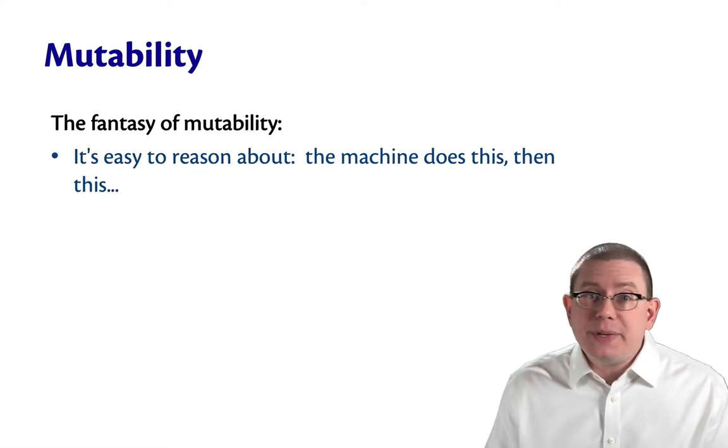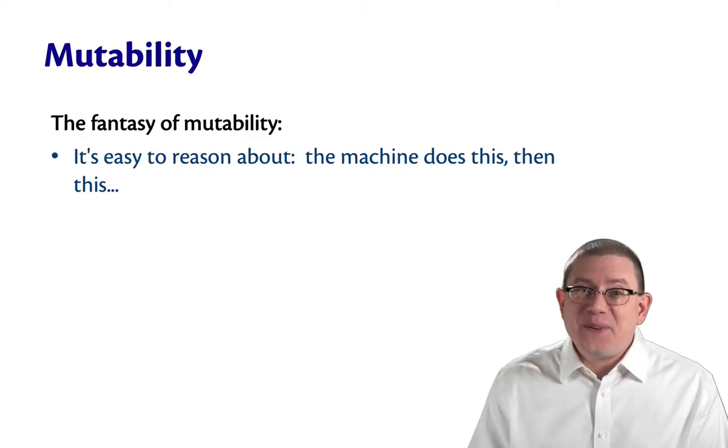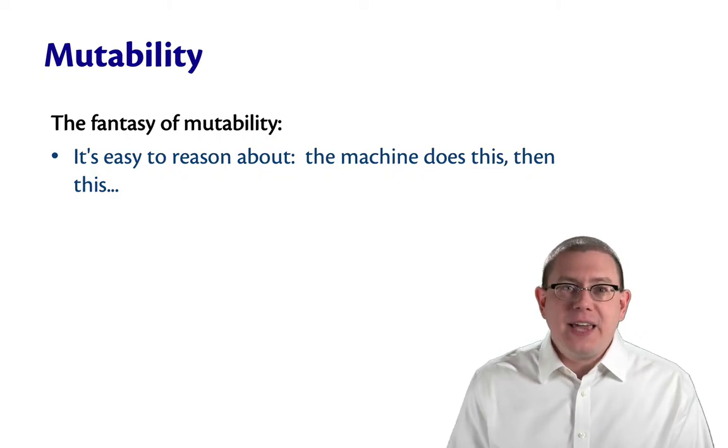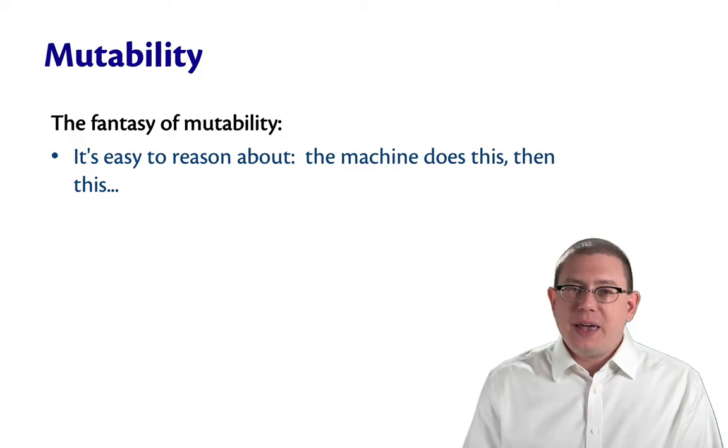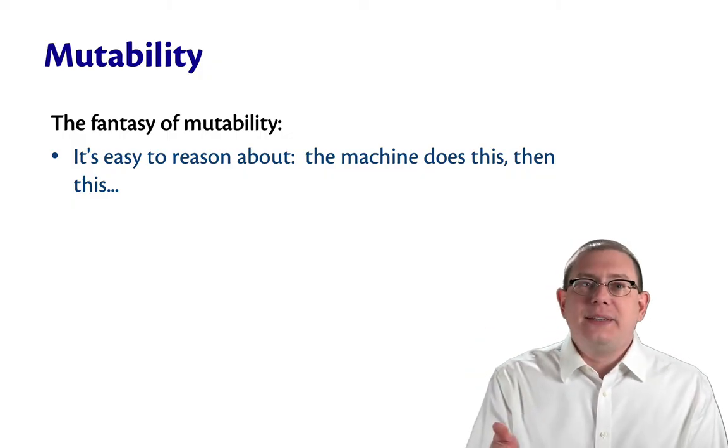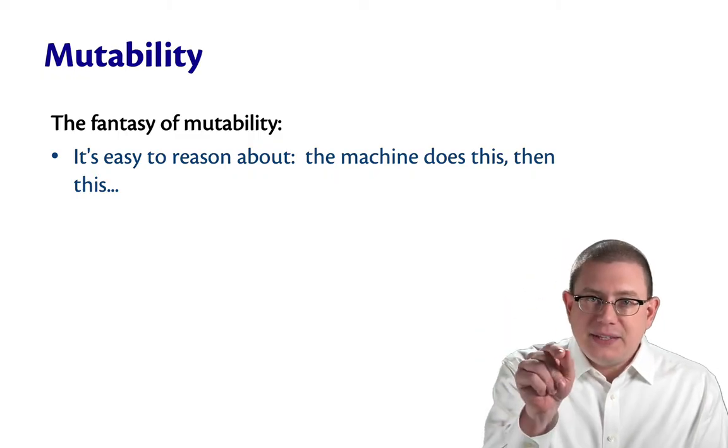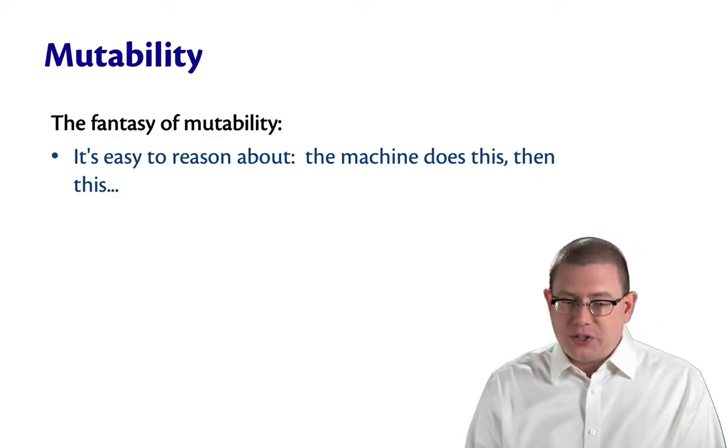Mutability is something you've probably been taking for granted for a long time now, and it's a very seductive notion. The fantasy of mutability is that it's easy to reason about. Because you think, well, it's not your fault, you were taught to think this. The machine does this, and then it does this, and this, and so forth and so on. There's just this linear sequence of actions that's taking place.